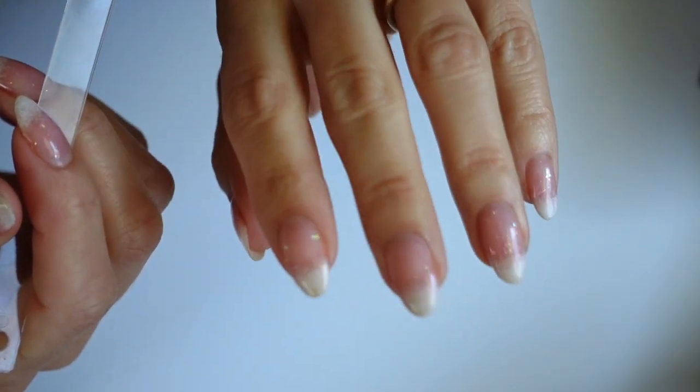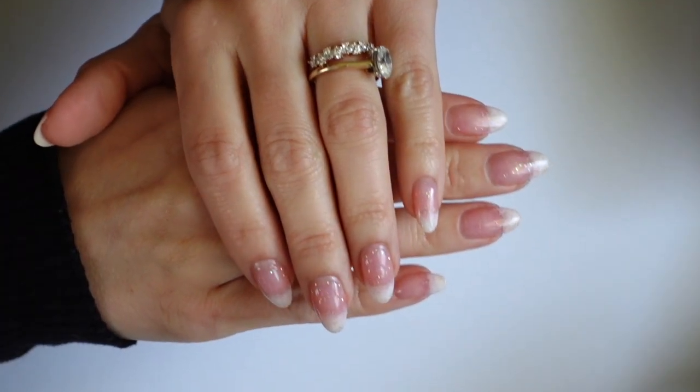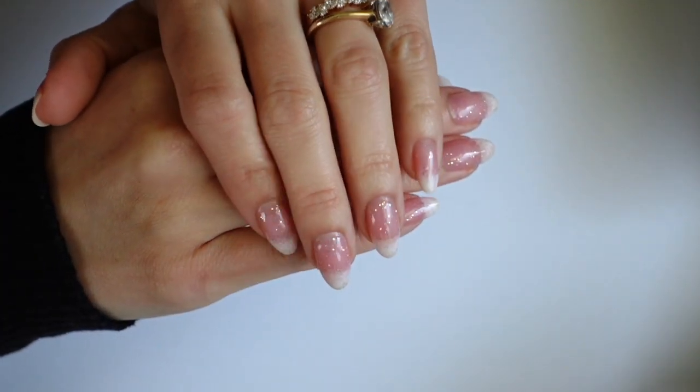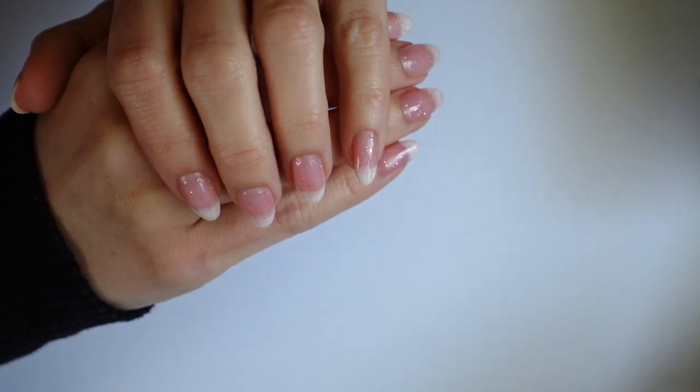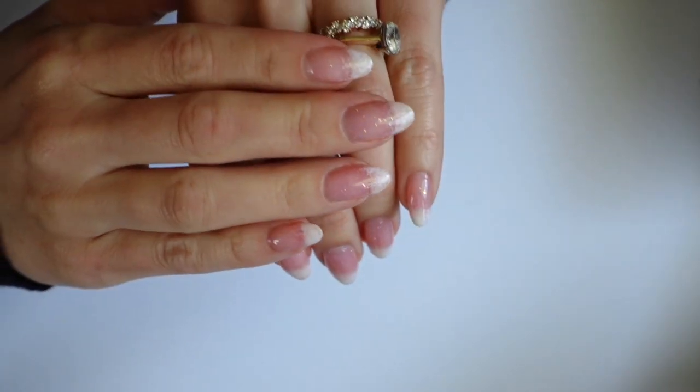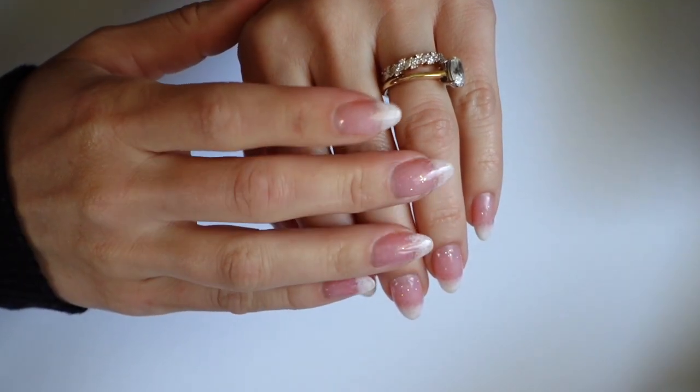Working with that regular old yellow sponge was completely doable, but you can use a beauty blender, a makeup sponge, whatever you have. When I did this mani last week, it was the only sponge I had, and I was like, let me try to use this, and it worked great.